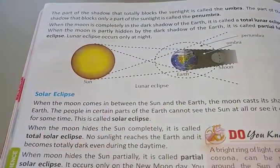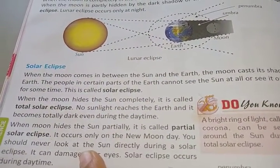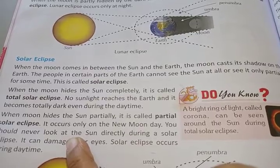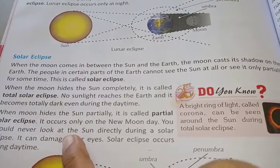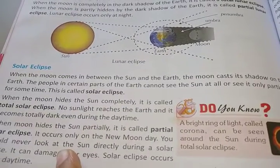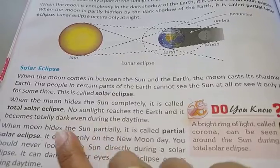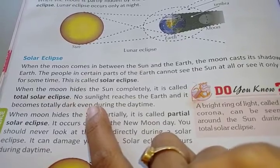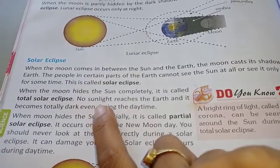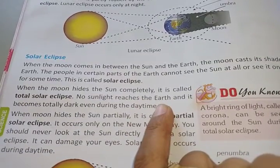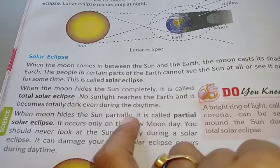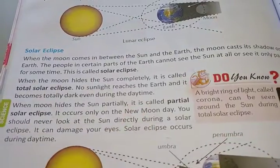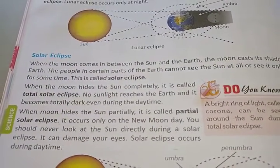Solar eclipse: when the Moon comes in between the Sun and the Earth, the Moon casts a shadow. Through the Moon's shadow, people in certain parts of the Earth cannot see the Sun at all, or can see it only partially for some time — this is called a solar eclipse. When the Moon hides the Sun completely, it is called a total solar eclipse. No sunlight reaches the Earth and it becomes totally dark even during daytime. When the Moon only partially hides the Sun, it is called a partial solar eclipse. It occurs only on the new moon day.